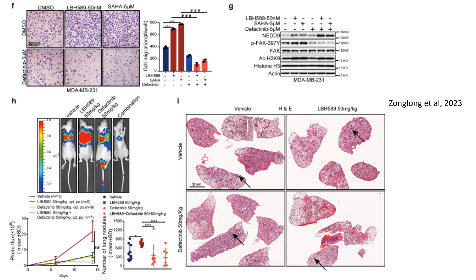This suggests that FAK inhibition can effectively counteract HDAC inhibitor-induced invasiveness. In panel G, Western blot analysis confirms that defactinib blocks FAK phosphorylation even in the presence of HDAC inhibitors, and this inhibition also correlates with reduced histone acetylation, suggesting that FAK activity is tightly linked to the effects of HDAC inhibitors. Panel H presents in vivo imaging of lung metastasis in mice treated with LBH589, defactinib, or their combination. LBH589 alone significantly increases metastatic tumor burden, while the combination of LBH589 and defactinib dramatically reduces metastasis, outperforming either treatment alone, as quantified in the graph.